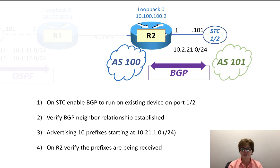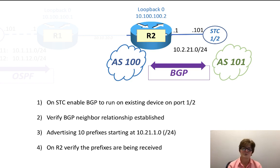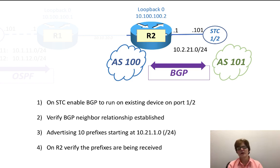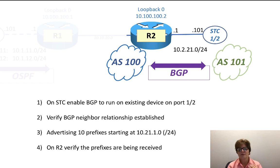Device 10.2.21.101 was there from a previous video. We're going to enable BGP to run on that with the device under test, which is Router2. Then we're going to verify the BGP neighbor relationship is established. Then we're going to advertise 10 prefixes starting with 10.21, and on Router2 we're going to verify the prefixes are received.